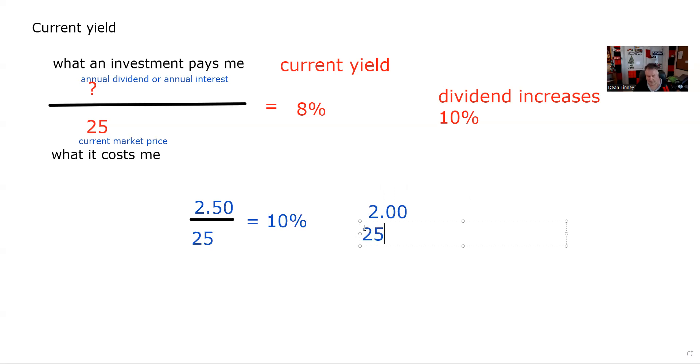I get my calculator, and I take 2 divided by 25, what it pays me divided by what it costs me. And indeed, that's 8%. All right, so now I'm on track to solve this question. I now have solved for this. That means that's a $2.00 dividend, because if I take 2 and divide by 25, I come up with 8%.